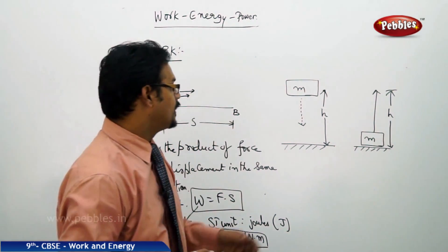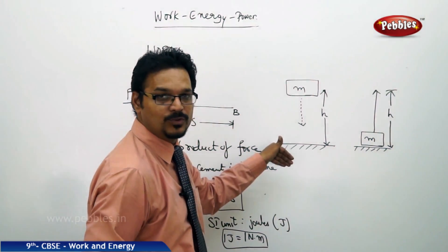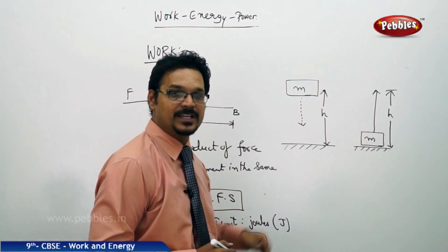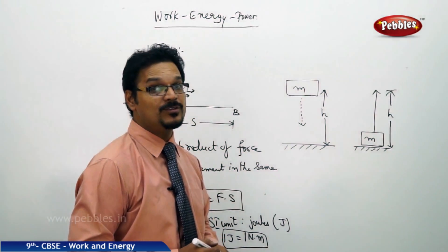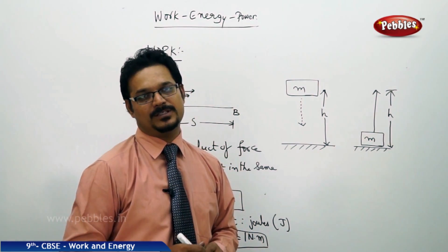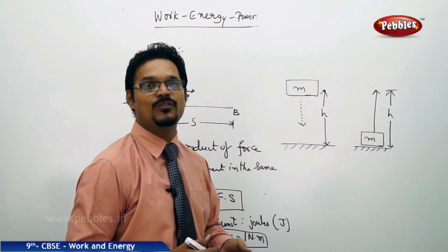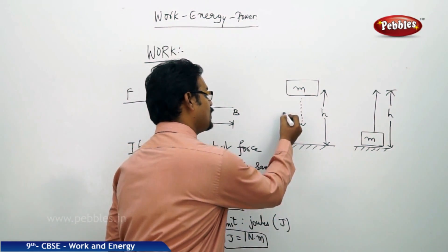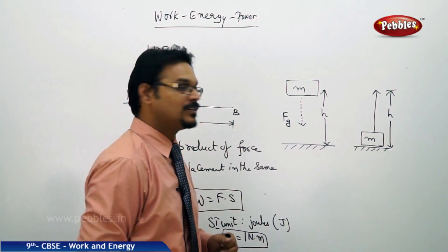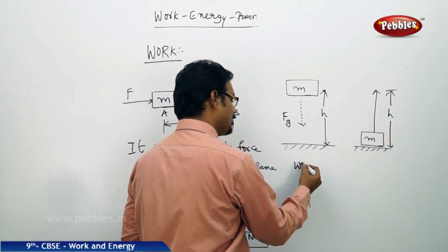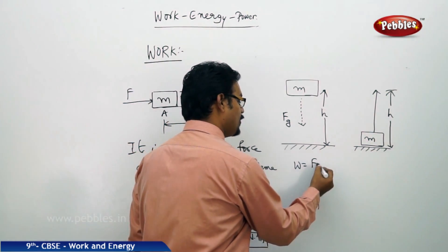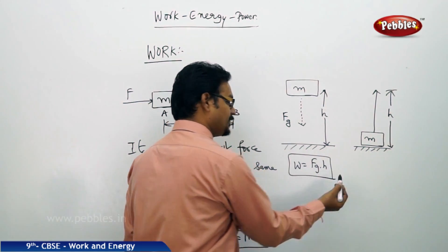Now come into this example. A body is falling to the ground, falling to the ground from a height H. Then can you calculate work done on this body? Really, is it possible? Yes, it is possible because here the force is there. What force? It is falling freely, the force is force of gravity or the gravitational force by the earth. So the amount of work done by the gravitational force on the body M is W equal to Fg into H. It is perfect.